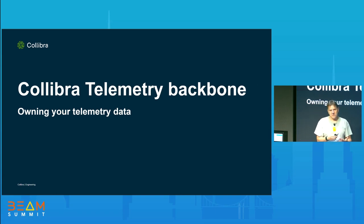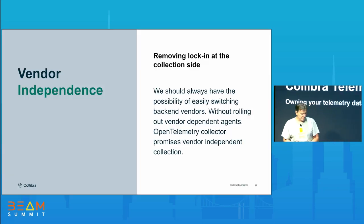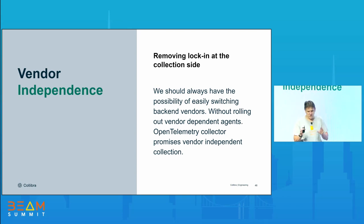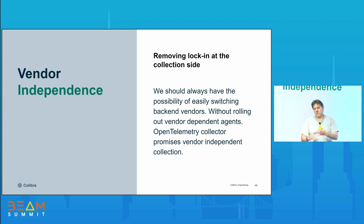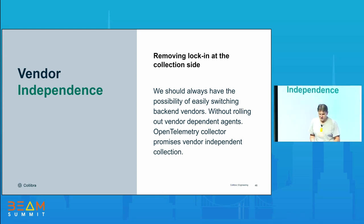This is kind of a continuation of last year's talk. I talked last year about our telemetry backbone. I'll go over that very quickly. One of the important reasons why we created the backbone on OpenTelemetry is vendor independence. We didn't want any vendor agents anywhere in our systems, because we have thousands and thousands of VMs and dozens of Kubernetes clusters. If we wanted to try out another vendor, we don't want to change all our agents — we just want to send OpenTelemetry signals.